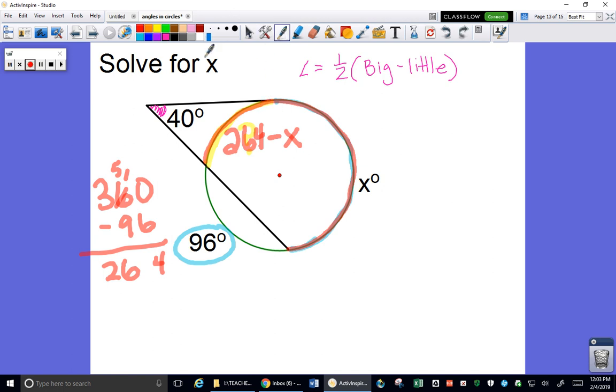That is a very important principle to remember whenever we're solving these problems, is that we might not be given enough information, but we're smart enough to figure out all the information. So 264 minus, the big arc in this case is x and the little arc is 264 minus x. And I put it in parentheses because it is an expression and expressions go in parentheses. This is the entire little arc. It has multiple parts.